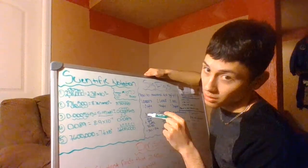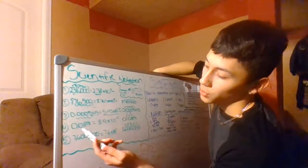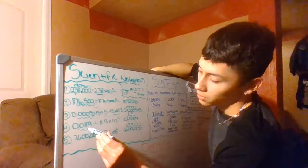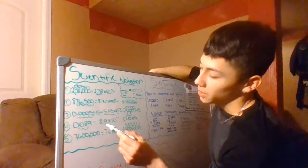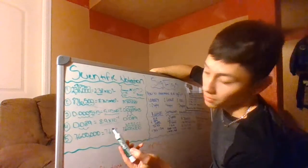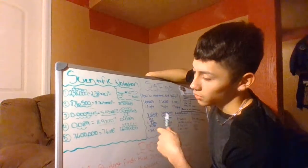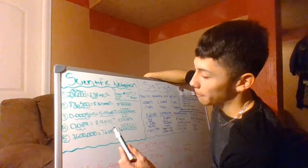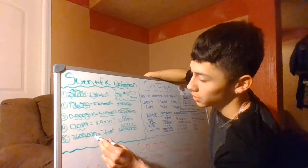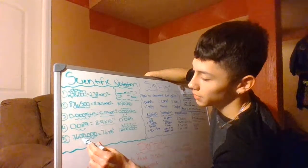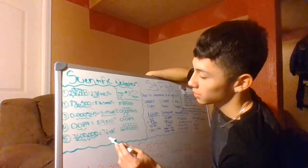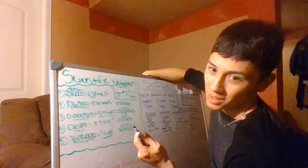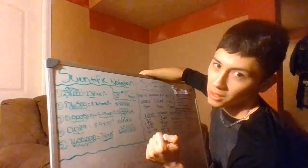Moving to the left is positive; moving to the right is negative. For example four: 0.089 — you move the decimal place two spots to the right to get 8.9, so the answer is 8.9 times 10 to the negative two. Another example: 7,600,000 — moving to the left six spots gives you 7.6 times 10 to the sixth power.